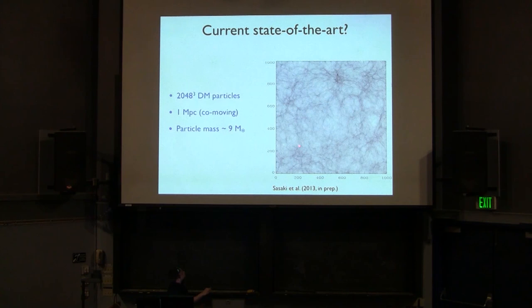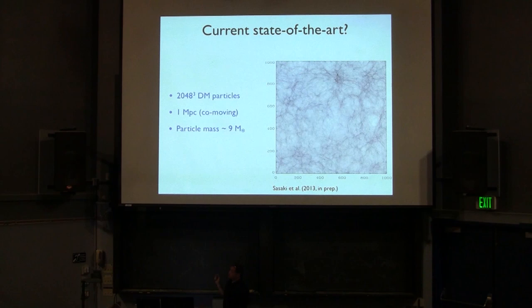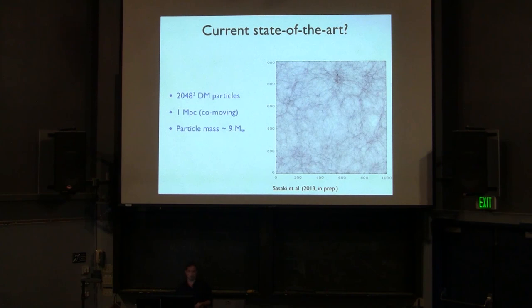To zoom in and follow the gas in one of these halos, people do multi-resolution zoom-in calculations, keeping some representation of the global box at lower resolution and then gradually increasing resolution into one halo by decreasing dark matter particle masses. The simulation shown was a pure N-body — no gas. The common practice is to run a big box, identify the first halo to collapse, zoom in, and find where the Pop 3 stars form. To see cosmic variance, you run another big box and take the first collapsing halo there too.